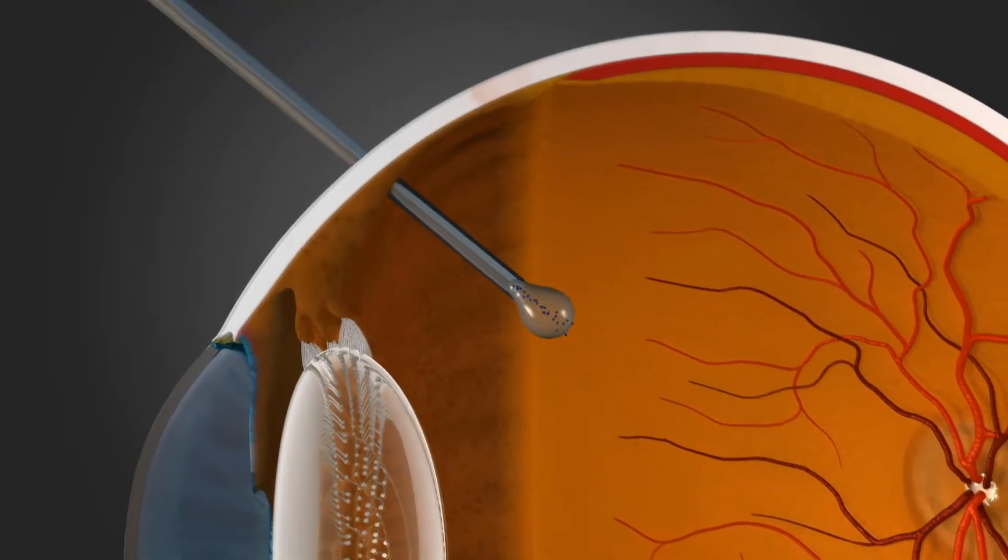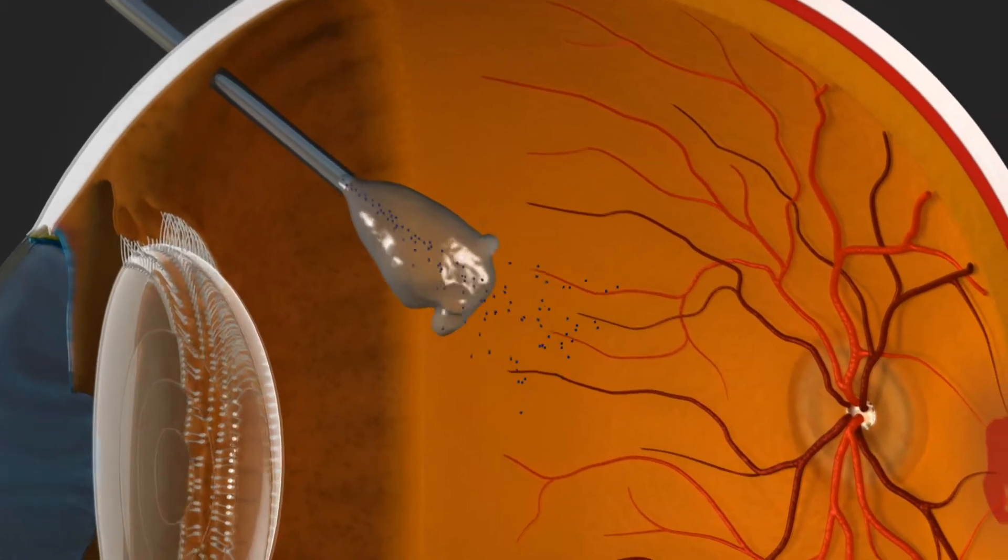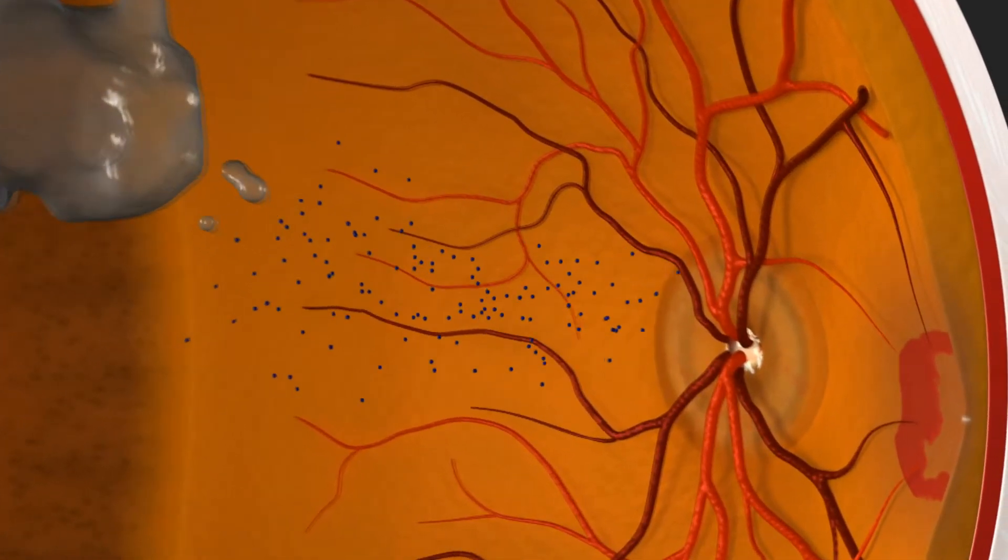Once the needle is in the eye, an anti-VGF medication is carefully injected into the vitreous, the jelly portion of the eye.